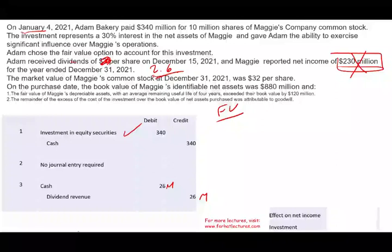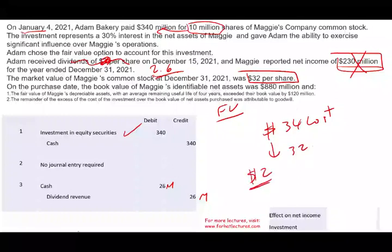At the end of the year, the fair market value of the stock is $32. If you purchased 10 million shares for $340 million, the cost per share was $34. At year-end the value went down to $32, so you have a loss of $2 per share — therefore you have to record a fair value adjustment. It's a loss. If you want to learn about fair value adjustments, please go to my website.